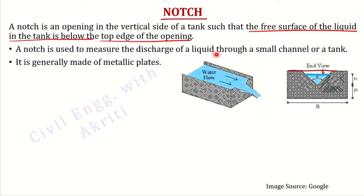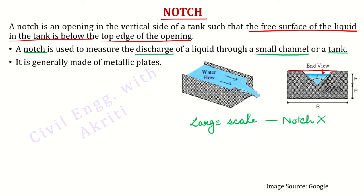A notch is used to measure the discharge of a liquid through a small channel or tank. Notch large scale ke liye preferred nahi hota. Agar aapke bahut badi river ya bahut badi open channel hai, toh aap notch ko prefer nahi karenge. Notch is only for small scale measurement of discharge. Isliye, kyunki small scale measurement hai, hum notch ko metallic plate se banaate hain — metal ka bana hota hai, kyunki iska purpose small scale discharge measure karna hai, ya small scale channels, pipes, ya tanks ke liye hai.